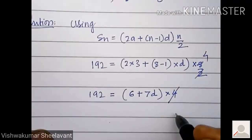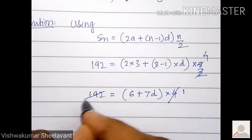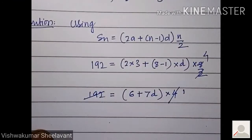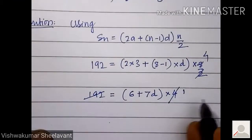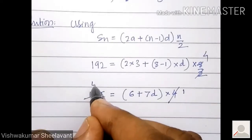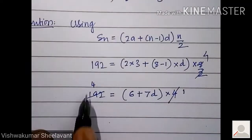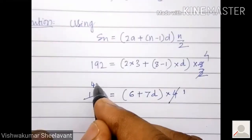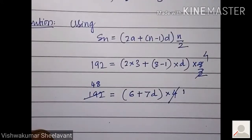You can cancel 192 by 4. 192 divided by 4 is 48. So 48 equals 6 plus 7d.